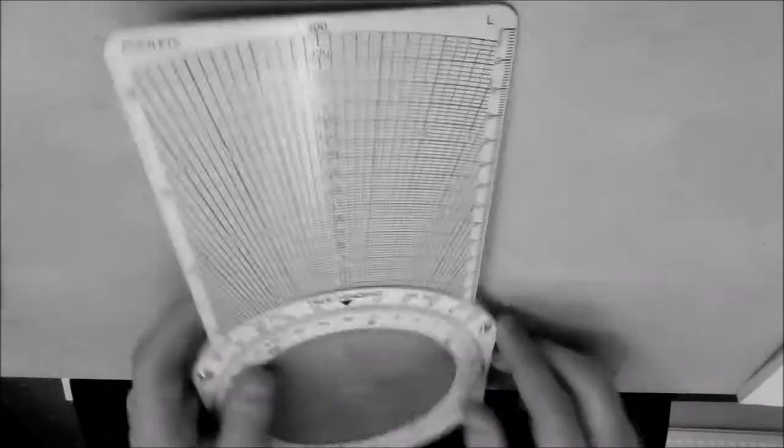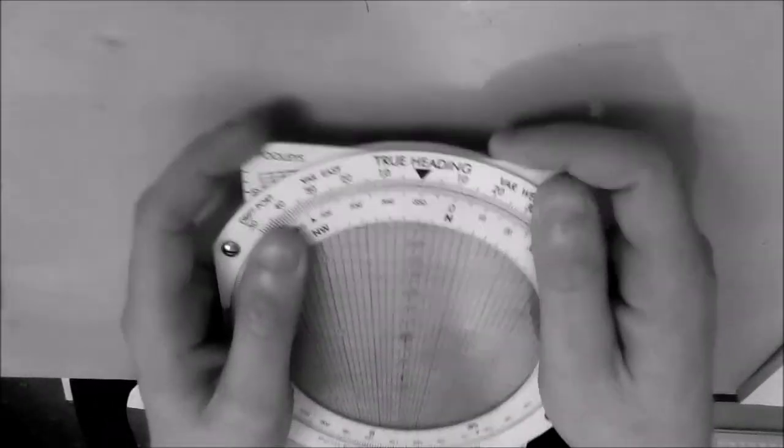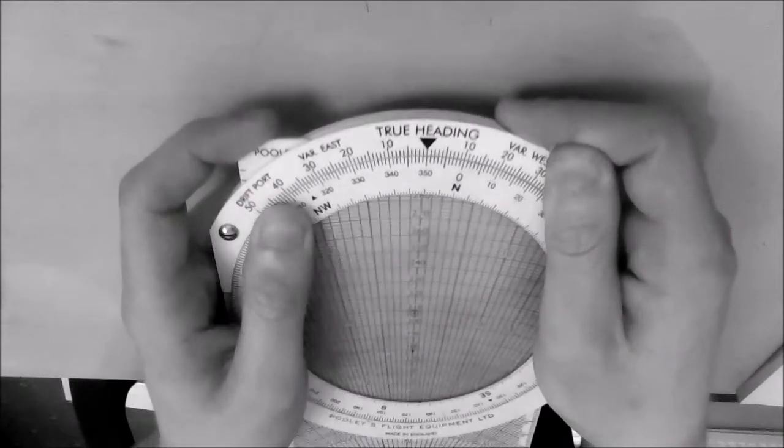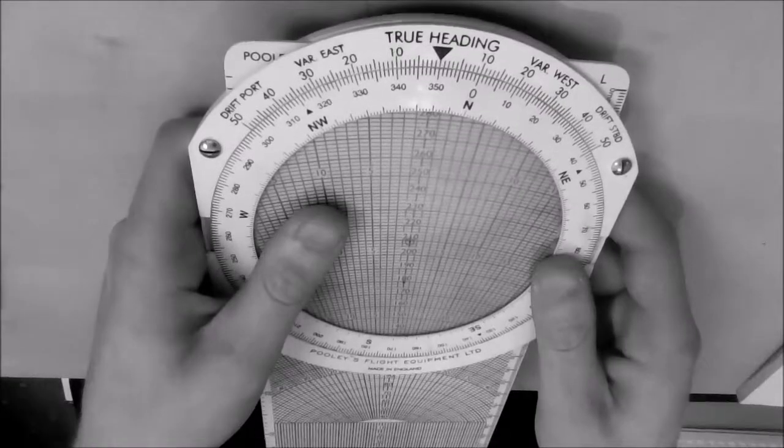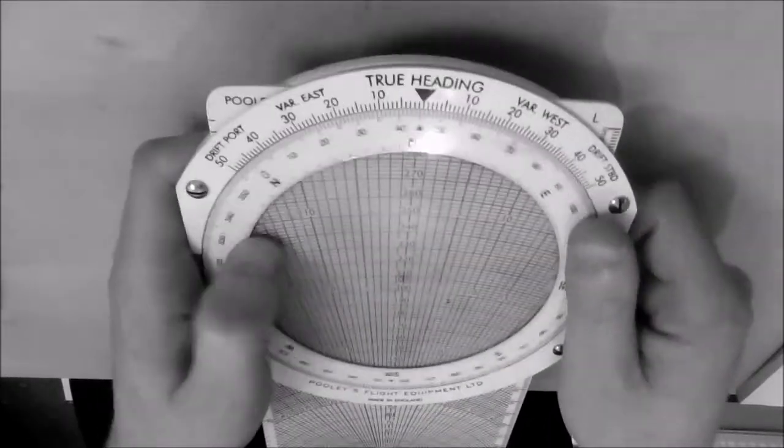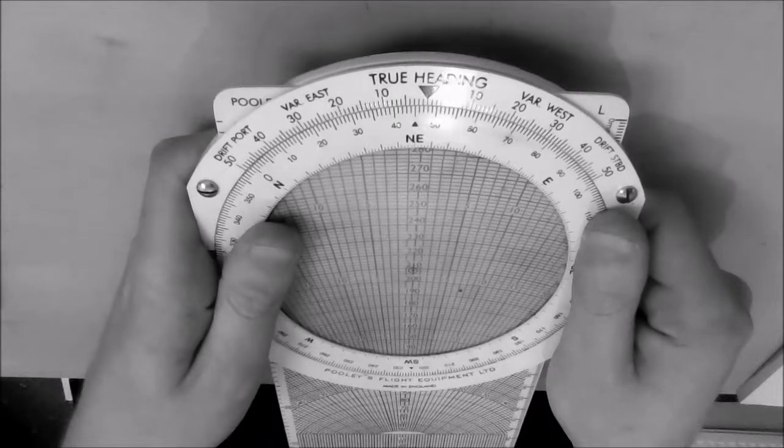The next thing we want to do is go up to our 210 TAS, which is there as you can see, and simply put our true track under the heading marker which is there.